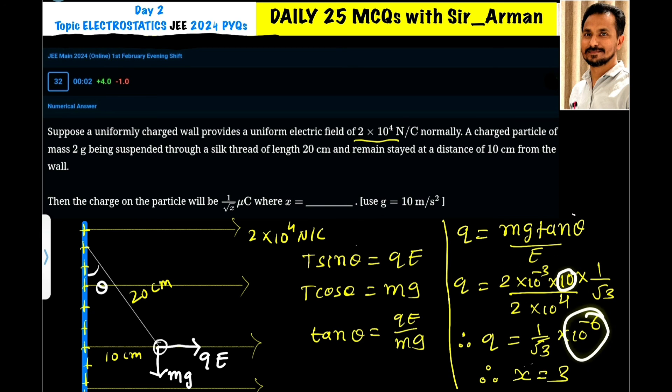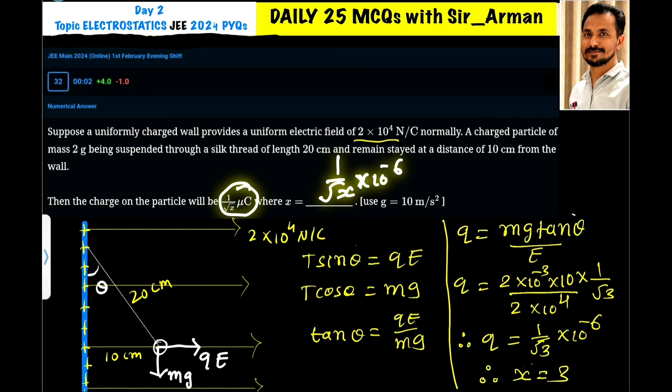So it's 10⁻⁶. 1/√3 × 10⁻⁶. If you compare with this, then it is 1/√x × 10⁻⁶. So x becomes 3.